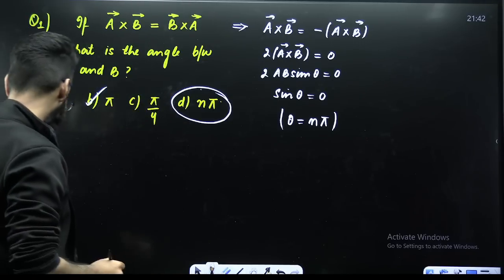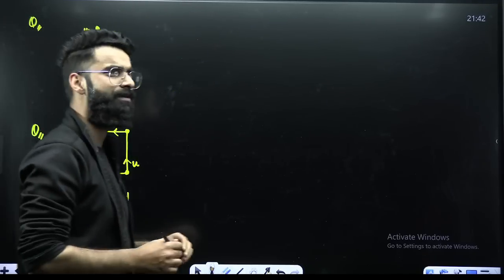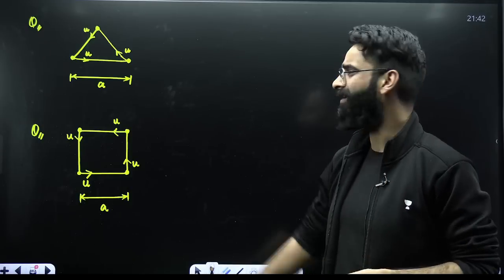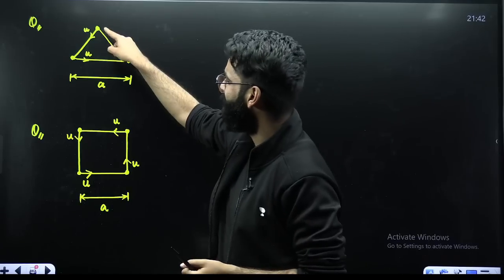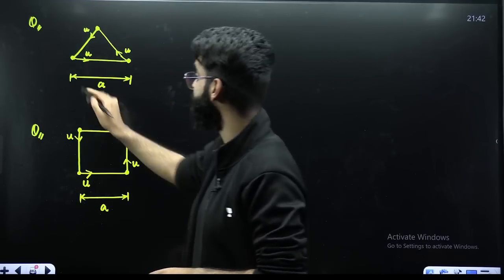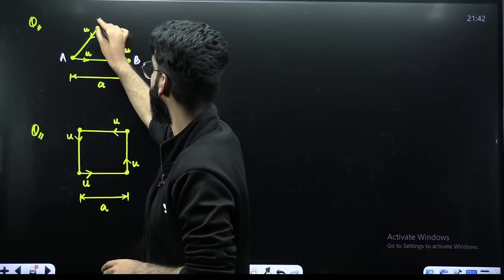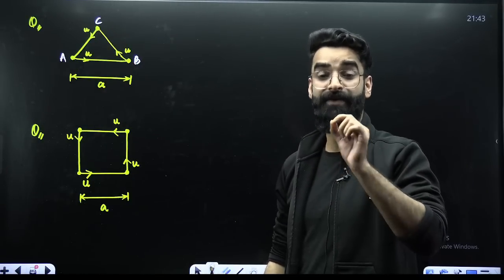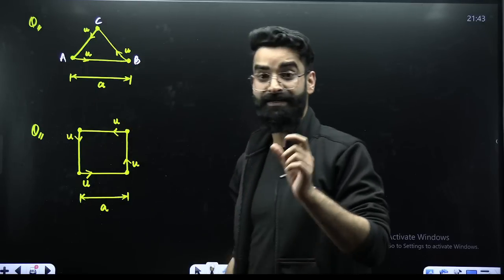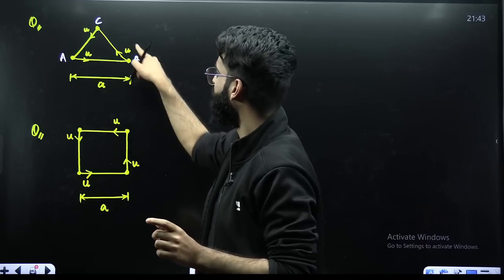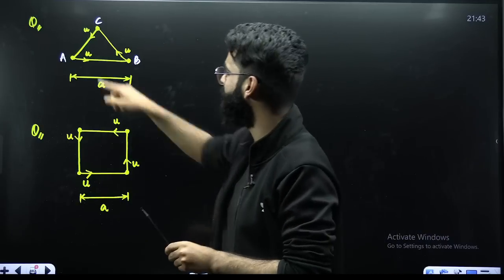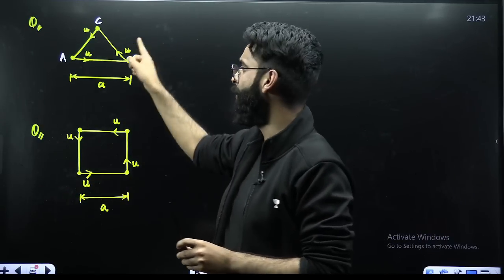Now moving on to the second question. This sort of question you would have seen in different books — HC Verma, I believe you would have solved it. DC Pandey also contains this particular question. Three particles are placed at the vertices of an equilateral triangle — three particles A, B, C placed at the vertices of the equilateral triangle. The length of one side of the equilateral triangle is equal to A. All three particles started moving towards each other simultaneously with the same speed U.